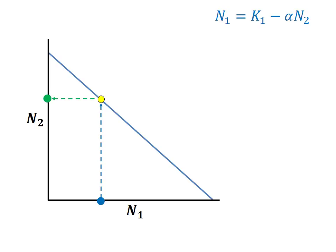What if the combination of n1 and n2 don't lie on the line? By definition, because this is an isocline of 0 growth, that means that n1 is not stable and will change if this point is not on the line. But will it increase or will it decrease?